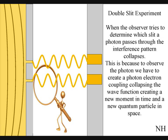Because to observe the photon, we have to physically create a photon-electron coupling, collapsing each wave-front into a new quantum particle that will have its own position in space and time, that the wave-front never had before the collapse.